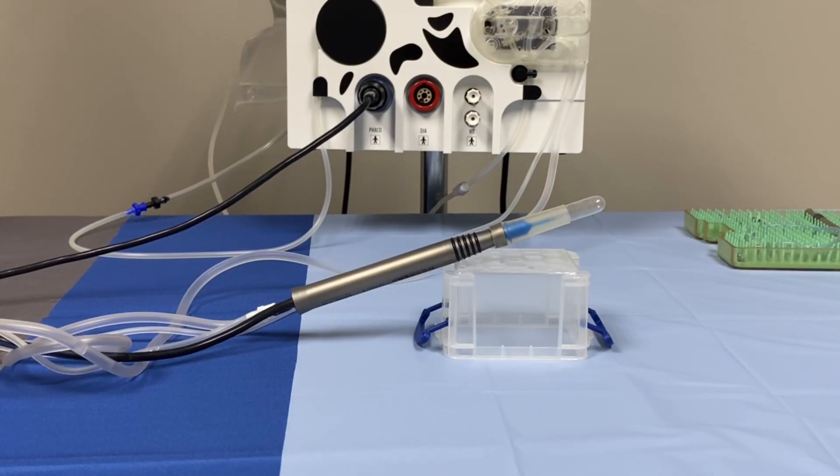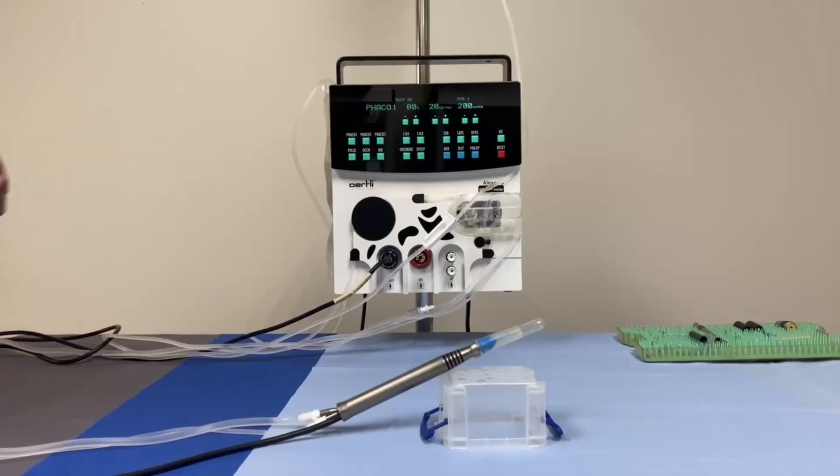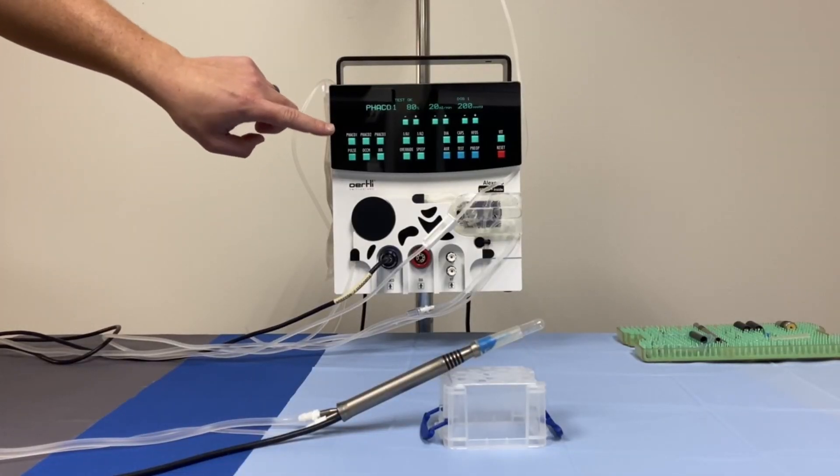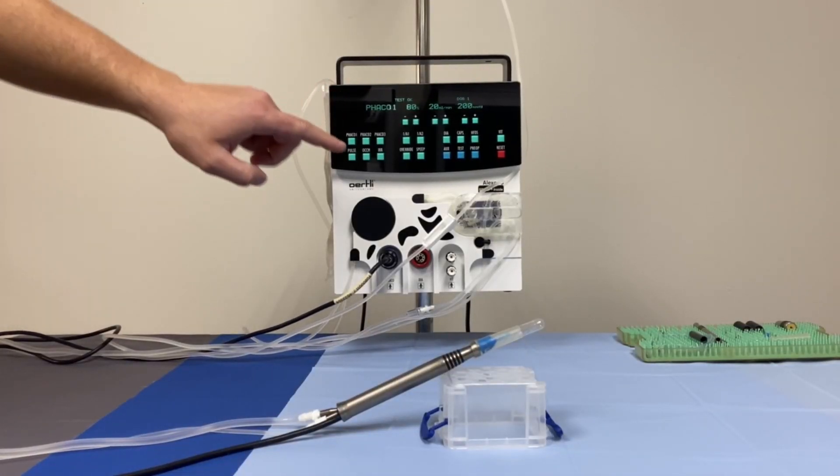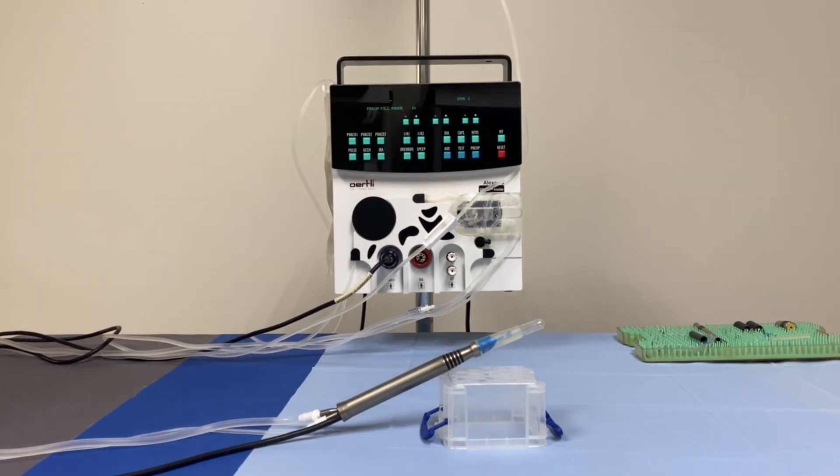Place the handpiece at a 45-degree angle to ensure optimal priming. Press the pre-op button to start the priming cycle. Ensure that a FACO function has been selected in order for the pre-op to test the system's FACO power. The machine automatically fills the test chamber. The FACO tip must be completely submerged in fluid. Allow the machine to run through the cycle until it displays test OK.